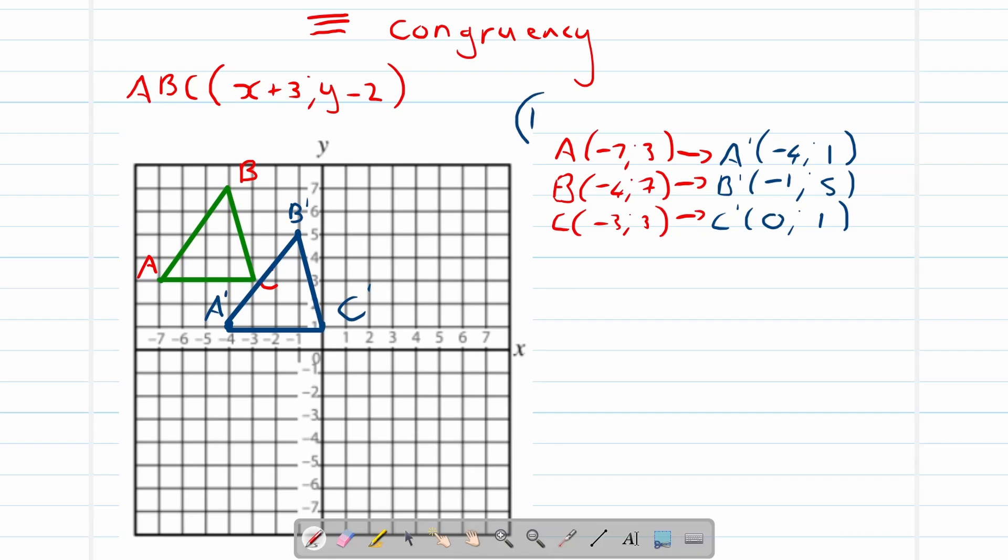So this was example one. We'll do one more, example two. Over here I'm going to give you the coordinates and you need to tell me what the rule was. So we start with our triangle A accent, B accent, C accent. Can you see we're starting with the blue one: negative 4, 1; negative 1, 5; 0 and 1.